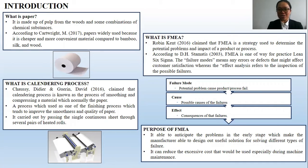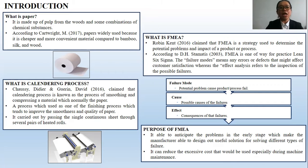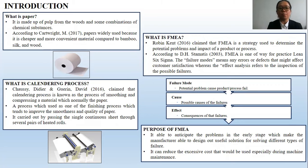First of all, I would like to ask you all one question. Do you all even know about what is paper? Paper is normally what we use to record or write something. Basically, it is made up of bark from the woods and some combination of chemical substances. According to CarVid 2017, he claimed that paper is normally used because it is cheaper and more convenient compared to bamboo, silk, and also wood.